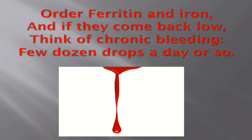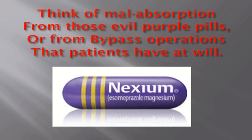Order ferritin and iron, and if they come back low, think of chronic bleeding — a few dozen drops a day or so. Think of malabsorption from those evil purple pills, or from bypass operations that patients have at will.